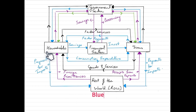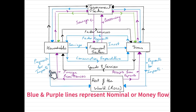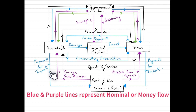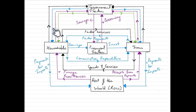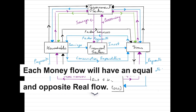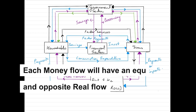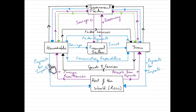The blue and purple flows in the diagram are the nominal flows or money flows. The real flow is not included to avoid clutter, but it is assumed that for each money flow there is a real flow moving in the opposite direction. When we look at households, there is a payment for imports that households are making to the rest of the world — this is the monetary flow going from households to the rest of the world.